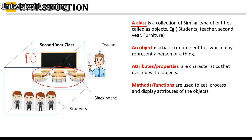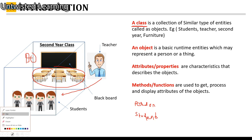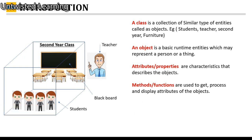Similar type of entities means all the students are one entity — both are the similar kind. You can also include the teacher along with students and name the class as 'person'. If you include only students, you can name the class 'students'. If you include furniture items, you can name the class 'furniture'.